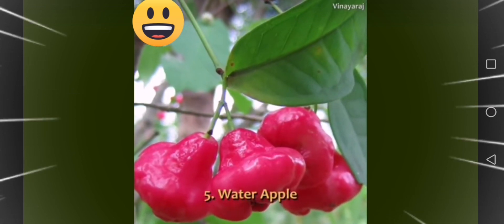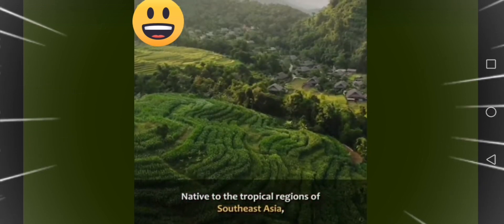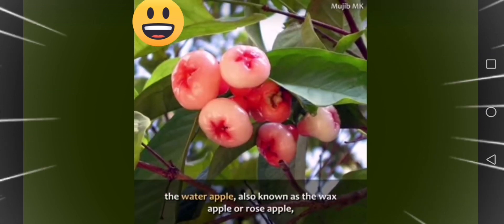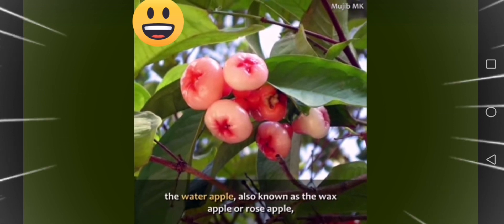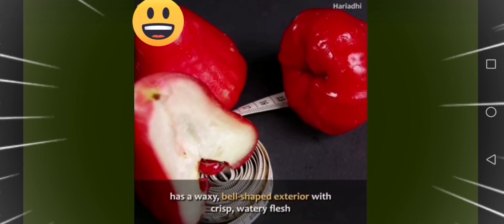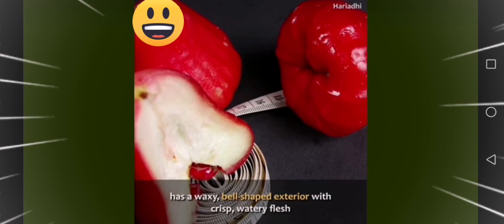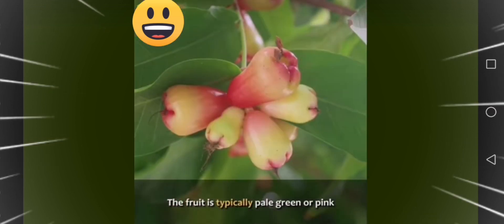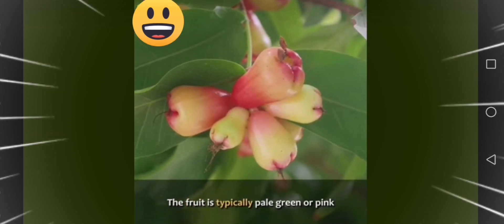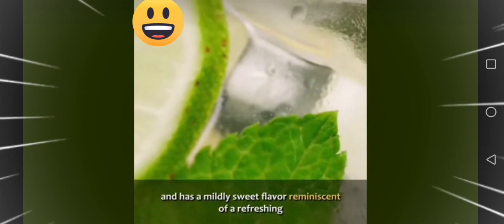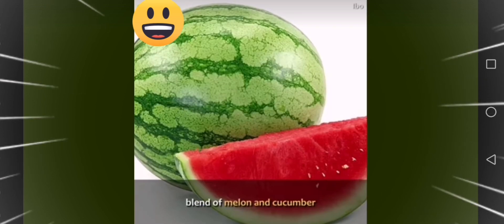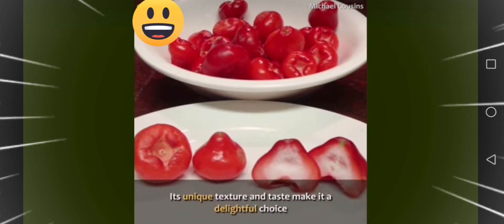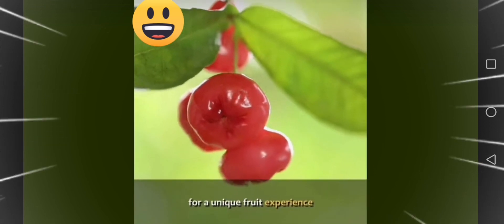Five, water apple. Native to the tropical regions of Southeast Asia, the water apple, also known as the wax apple or rose apple, has a waxy, bell-shaped exterior with crisp, watery flesh. The fruit is typically pale green or pink and has a mildly sweet flavor reminiscent of a refreshing blend of melon and cucumber. Its unique texture and taste make it a delightful choice for a unique fruit experience.